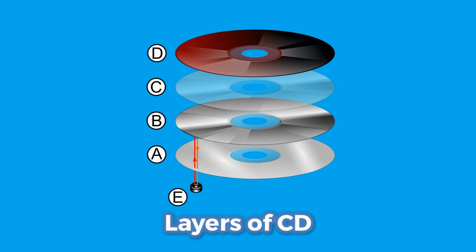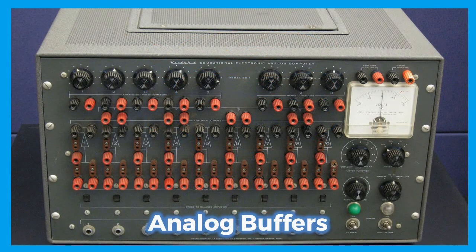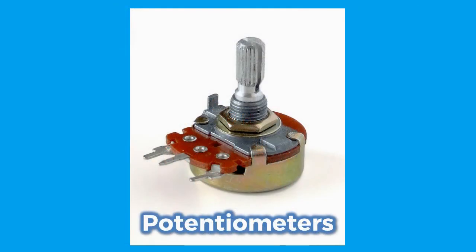Now let us discuss the layers of a CD. Layer A is the polycarbonate disc layer, which encodes data on the bumps. Layer B is the shiny layer, which reflects the laser. Layer C is a layer of lacquer, which protects the shiny layer. Layer D is the artwork, which is screen-printed on the top.